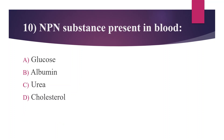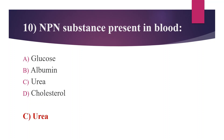Tenth question: NPN substance present in blood. Option A: glucose. Option B: albumin. Option C: urea. Option D: cholesterol. The answer is Option C, urea. NPN stands for non-protein nitrogen — nitrogen-containing compounds that are not proteins or polypeptides. Examples of NPN substances are urea, uric acid, ammonia, creatinine, creatine, and free amino acids.